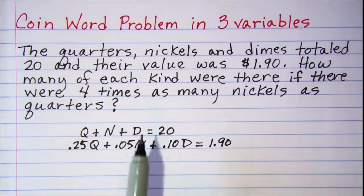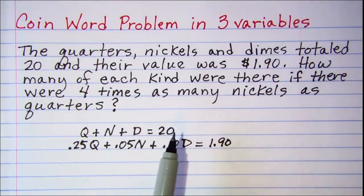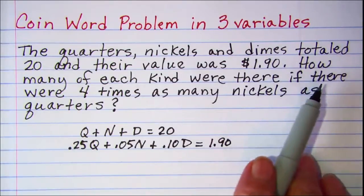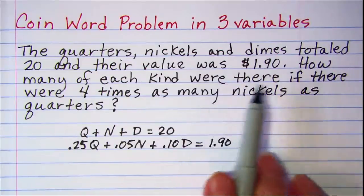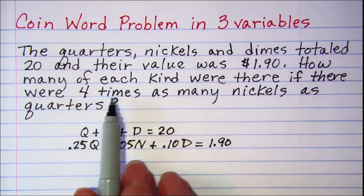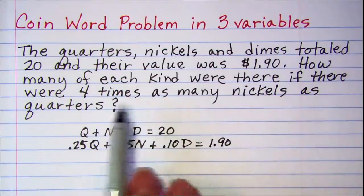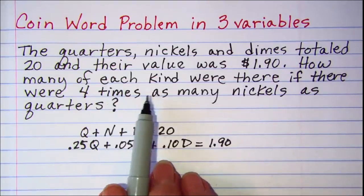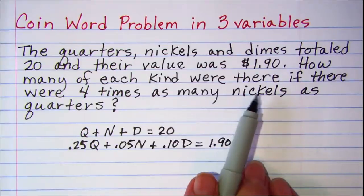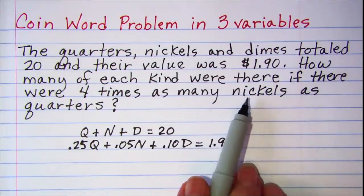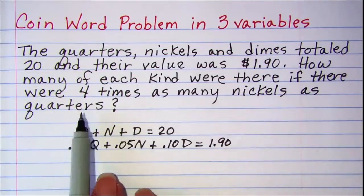Now since we have three variables, we're going to need three equations. Our third equation will come from this last sentence. How many of each kind were there if there were four times as many nickels as quarters? Now this is a little tricky in that we have to ask ourselves which is bigger, the quantity of nickels or the quantity of quarters?